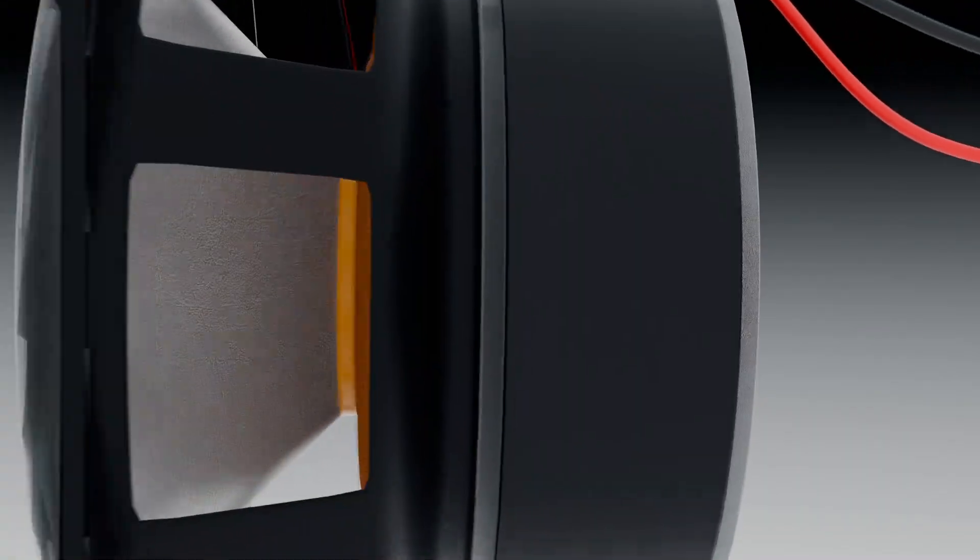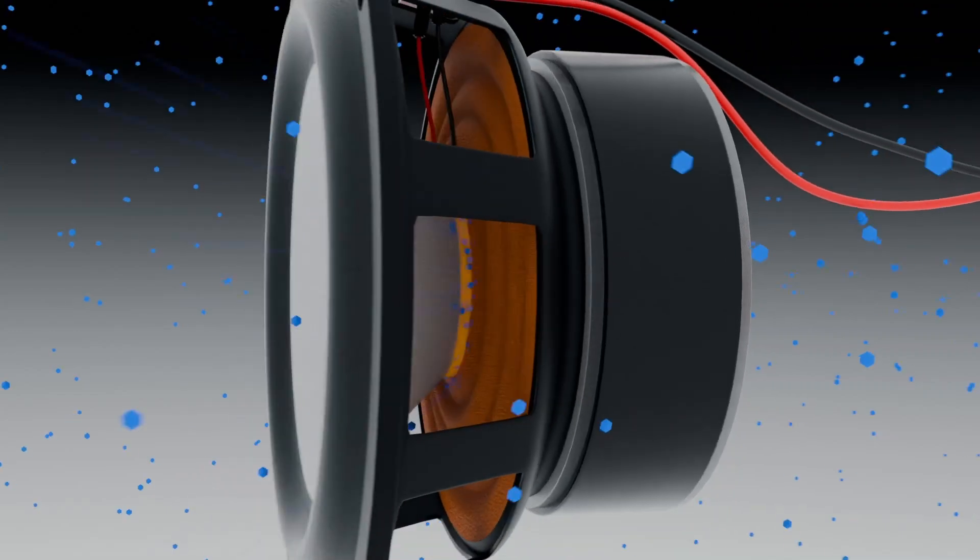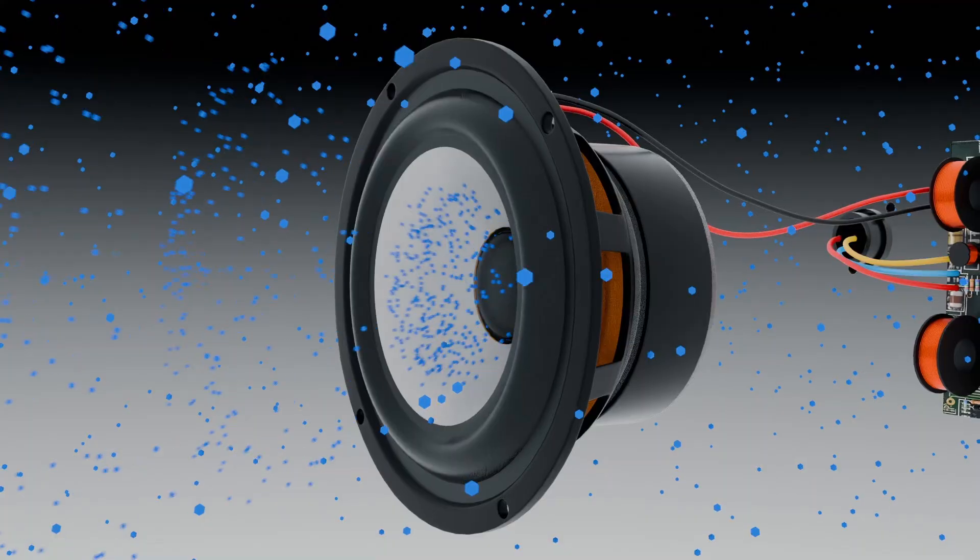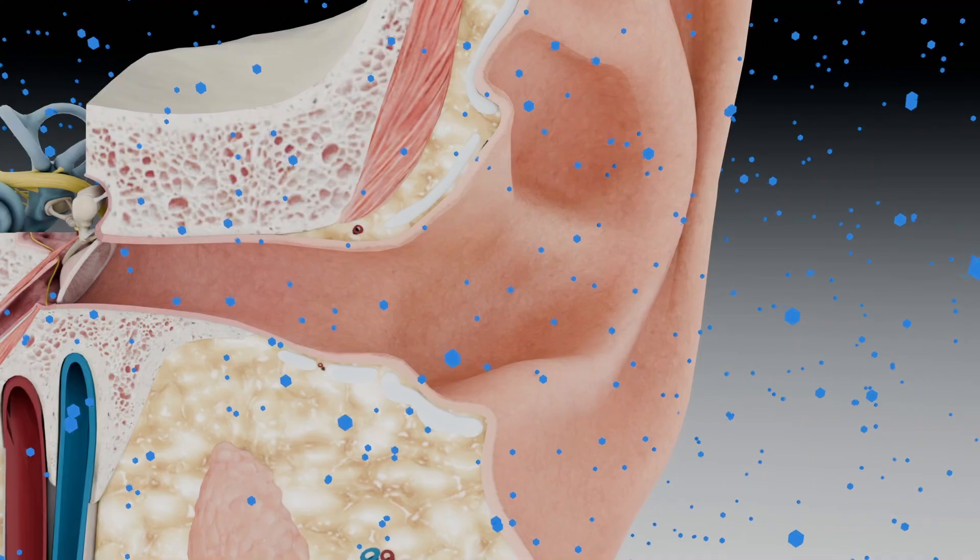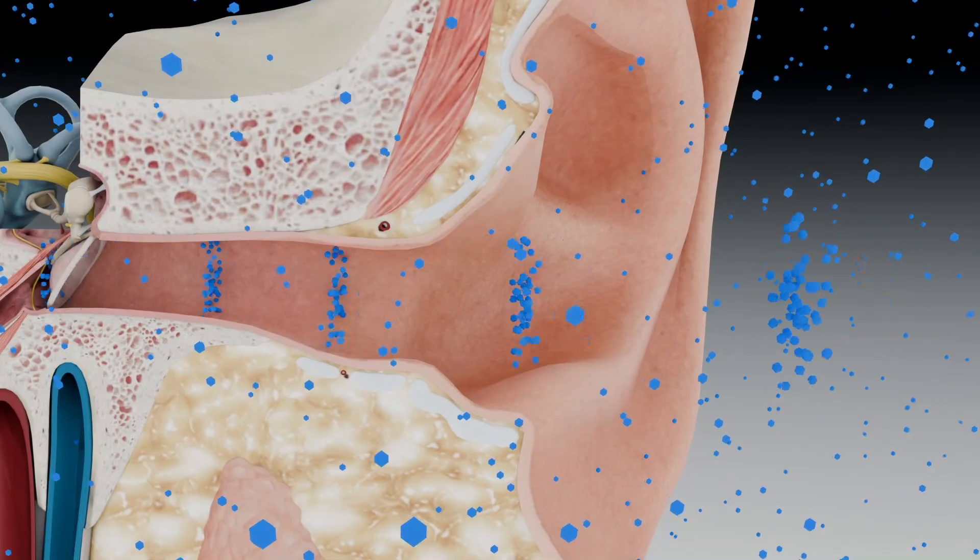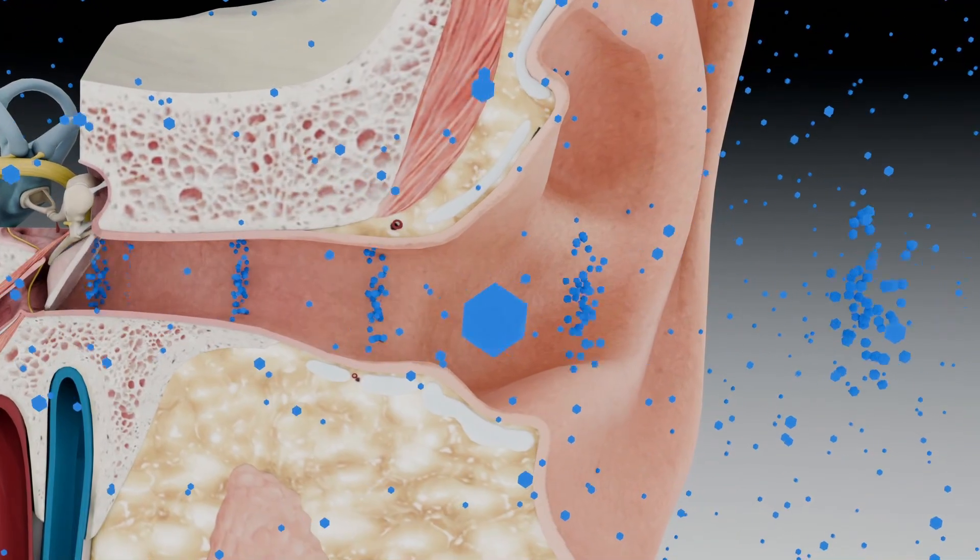As the cone moves back and forth, it causes vibrations in the surrounding air molecules. These vibrations create waves, more accurately, pressure waves. When these pressure waves reach our ears, the eardrum responds to the movement of the air molecules, and our brain interprets these movements as sound.